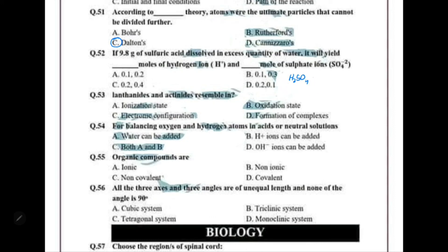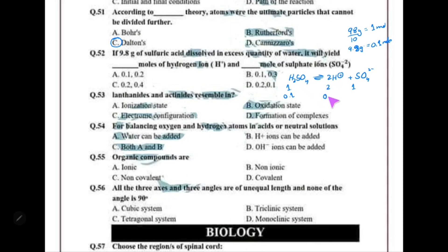H₂SO₄ when dissolved produces two hydrogen ions and one sulfate ion. The molar mass of sulfuric acid is 98 g/mol, so 9.8 grams equals 0.1 mole. Therefore, 0.1 mole H₂SO₄ produces 0.2 mole hydrogen ions and 0.1 mole sulfate ions. The answer is choice D: 0.2 and 0.1.